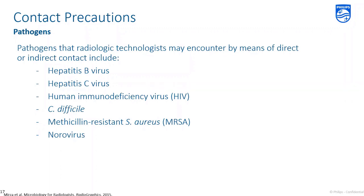Be sure to follow the correct hand hygiene procedure depending on what pathogen your patient is known or suspected to have. For example, C. difficile is not killed by alcohol-based hand sanitizer, and healthcare workers must use soap and water when working with patients with this infection.